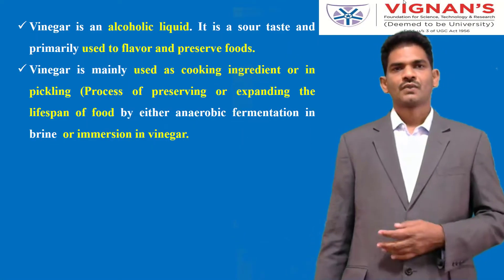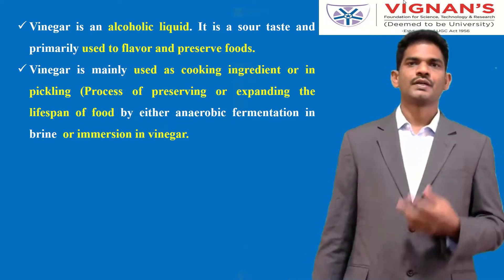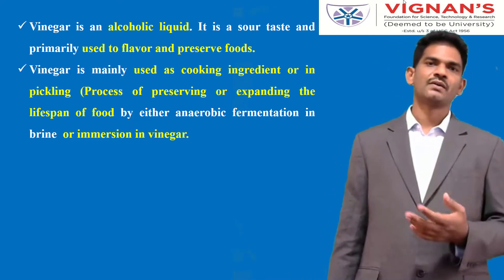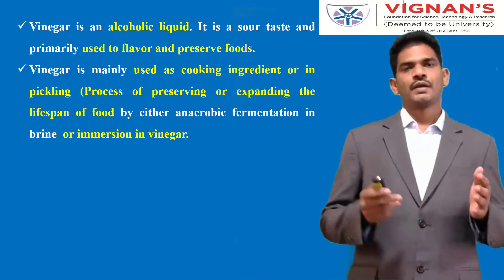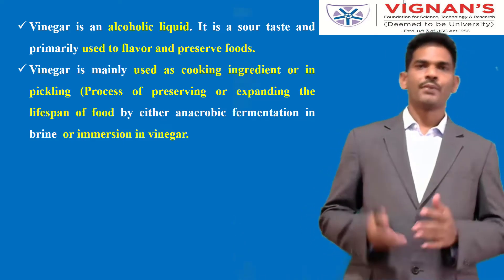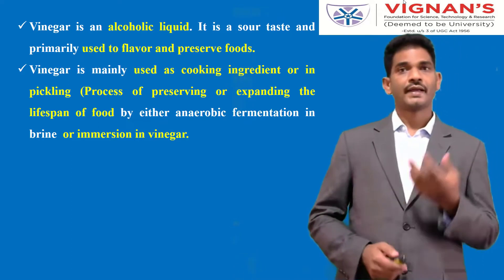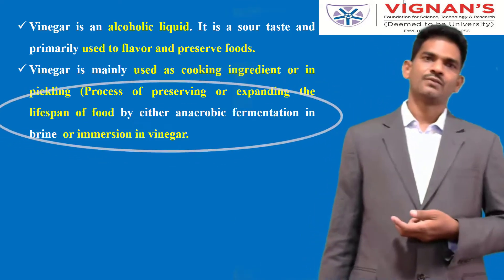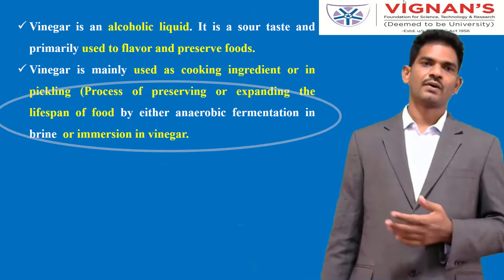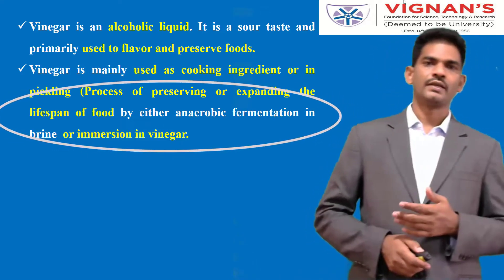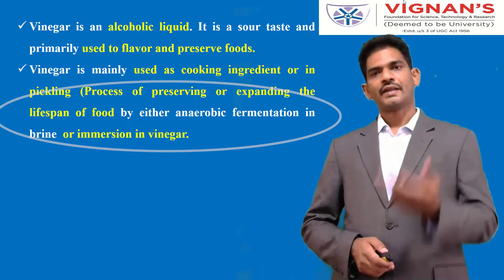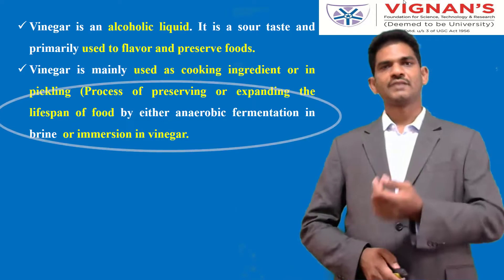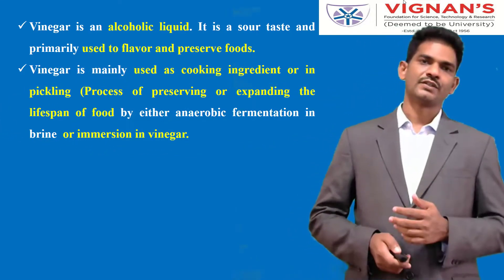Vinegar is an alcoholic liquid, sour in taste. It can be primarily used as a flavoring agent and also for preserving various food materials. For household applications, vinegar is used for enhancing flavor and preserving food. In the pickling process, we can use vinegar. Pickling is basically preserving food materials for a long time — either by running an anaerobic fermentation process in a salt solution, or by immersing the food material in vinegar. Vinegar has commercial significance in food industries.